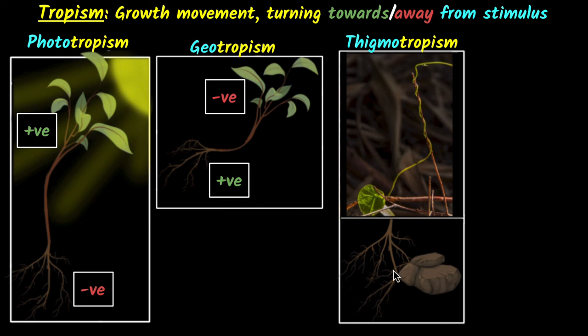And if you look at the roots, sometimes when the roots touch, like say rocks, it'll go away from it. Again, this is turning due to touch, thigmotropism.